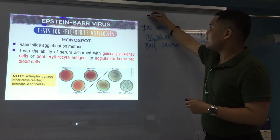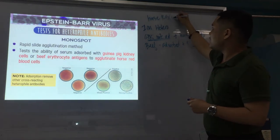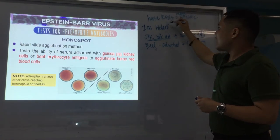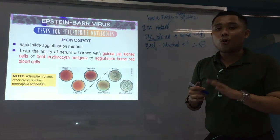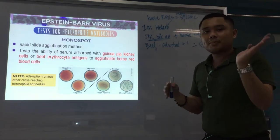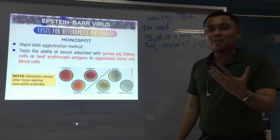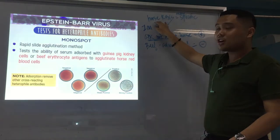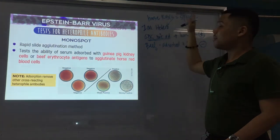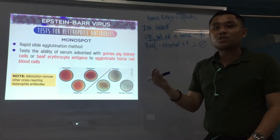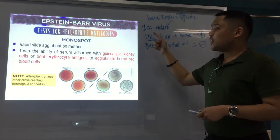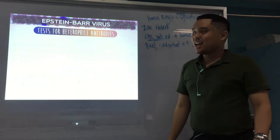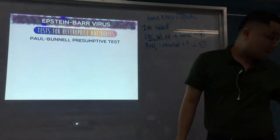We use horse RBCs because they are a more specific indicator of your IM heterophil antibodies. In the succeeding tests, sheep RBCs are used instead. But for Monospot, we use horse RBCs. Now we go to the next step, which is the Paul Bunnell Presumptive Test.